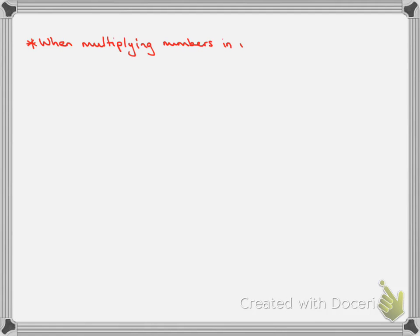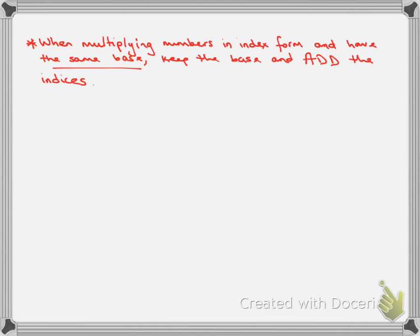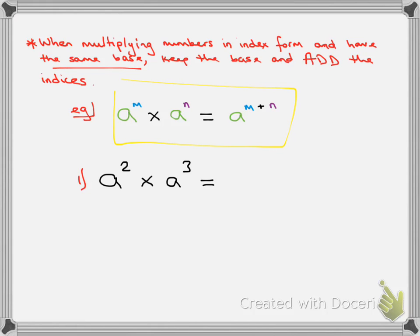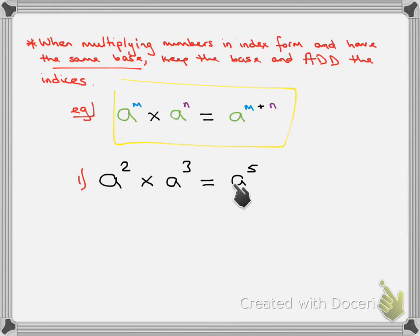The first law: when multiplying numbers in index form with the same base — and that's important — we keep that base and add the indices or powers. So a to the power of m multiplied by a to the power of n gives us a to the power of m plus n. For example, a to the power of 2 times a to the power of 3: we add 2 plus 3 to get a to the power of 5, keeping the same base.